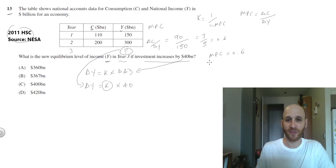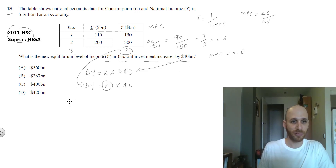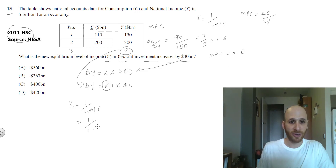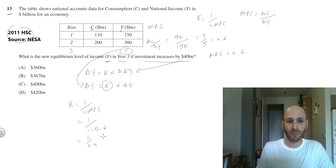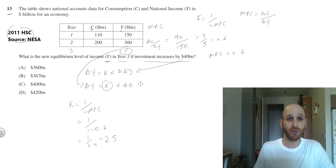That is the key, because now I can say the multiplier K equals 1 on 1 minus MPC, which equals 1 on 1 minus 0.6, which equals 1 over 0.4, which gives me 2.5.